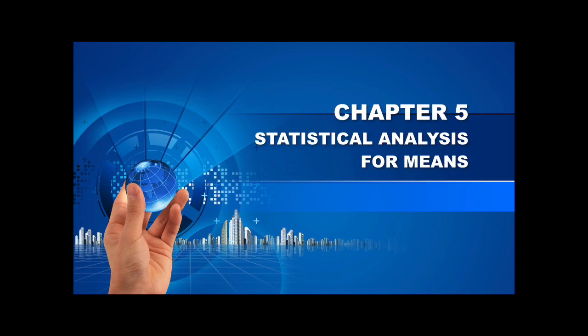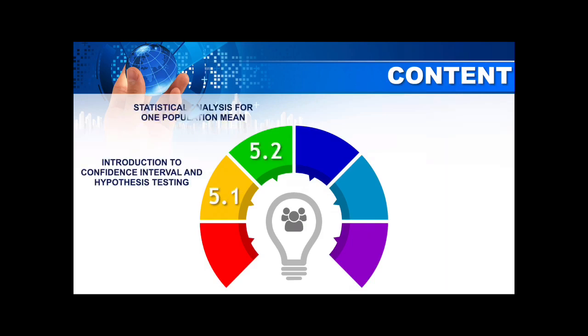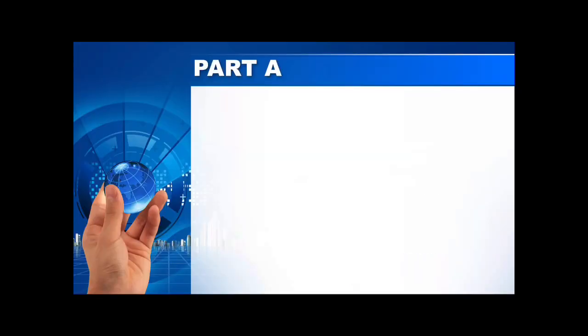This is a new chapter. In the content we have sections 5.1, 5.2, 5.3, 5.4, and 5.5. Chapter 5 will be divided into 3 parts: Part A, Part B, and Part C. Part A is all about the confidence interval.